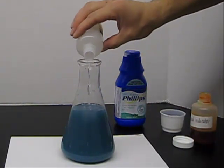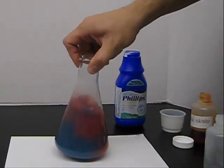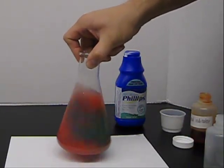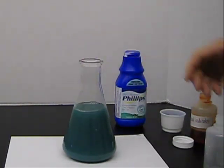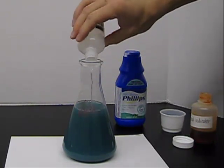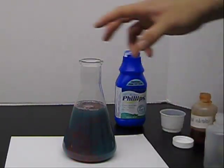And you can keep adding this over and over, stirring, getting it to change back and forth, until you run out of milk of magnesia in your reaction or you run out of HCl. Either way.